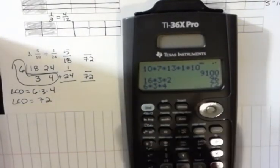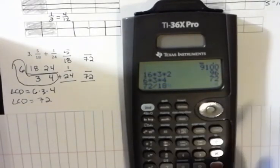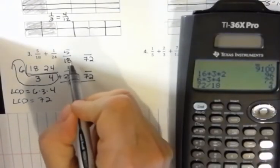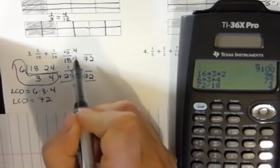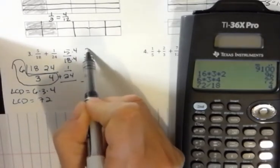So, if I take 72 and divide by 18, I get 4. So, that means I'm going to multiply 18 times 4 to get 72, and then I have to multiply 5 times 4 and get 20.